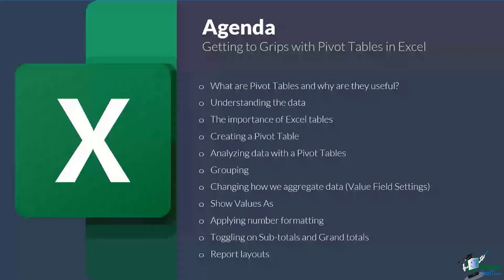We'll create our first pivot table, then I'll show you the most important part — how you can pivot fields around and move things to analyze your data in lots of different ways in about two seconds. We'll talk about grouping, how we can aggregate our data or change the aggregation method — whether we're summing, counting, or working out the average. I'll show you how to display values as something else, such as a percentage of the total.